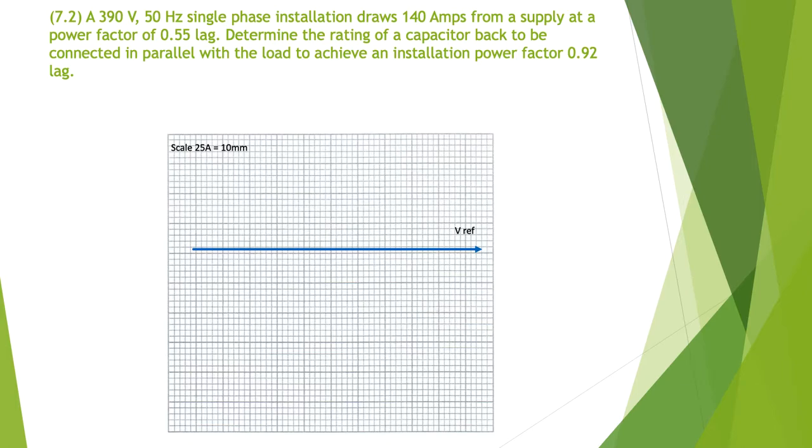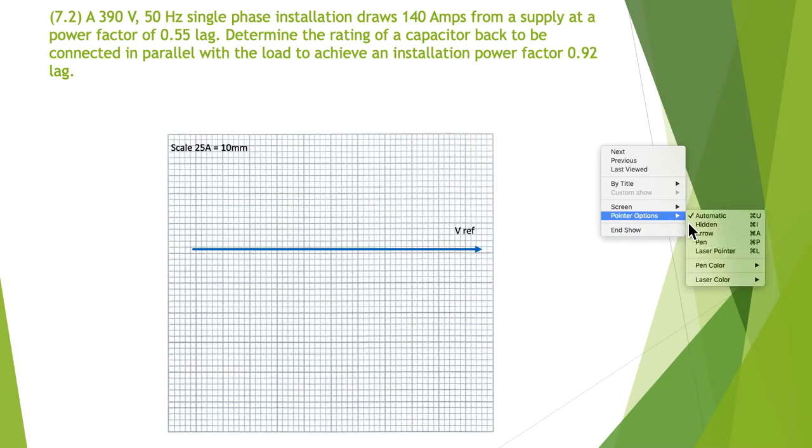Problem 7.2: A 390 volt, 50 hertz single phase installation draws 140 amps from a supply at a power factor of 0.55 lag. Determine the rating of a capacitor bank to be connected in parallel with the load to achieve an installation power factor of 0.92 lag. These are the two critical pieces of information we need.